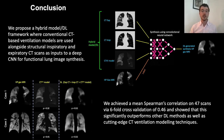In conclusion, we demonstrate that leveraging the synergy between deep learning and CT ventilation modelling generates physiologically plausible synthetic ventilation scans across several diseases, indicating the potential of deep learning based regional lung function from routinely acquired CT scans without exogenous contrast. This has implications for several clinical applications, such as functional lung avoidance radiotherapy.